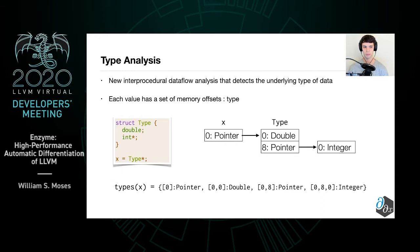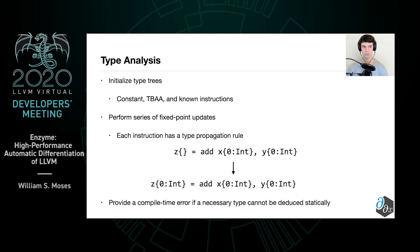In particular, each value is given what's known as a type tree, which is a set of memory offsets to the corresponding type. For example, if we had a struct of a double then an integer pointer, and a pointer to that type, we would have x as a pointer to the type, which contains at offset 0 the double, and then at offset 8 a pointer to the corresponding integer. We go ahead by first initializing the type trees from any information we have — constant information, type-based alias analysis information, and any known instructions. From here, we perform a series of fixed-point updates where every instruction inside of LLVM has a particular type propagation rule. For example, the integer add instruction, if it has two integers as its arguments, we know the result will also be an integer.